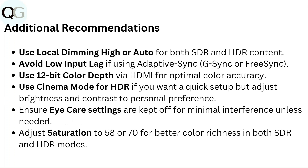Additional Recommendations: Use Local Dimming High or Auto for both SDR and HDR content. Avoid Low Input Lag if using Adaptive Sync, G-Sync, or FreeSync. Use 12-bit Color Depth via HDMI for optimal color accuracy. Use Cinema Mode for HDR if you want a quick setup, but adjust brightness and contrast to personal preference.